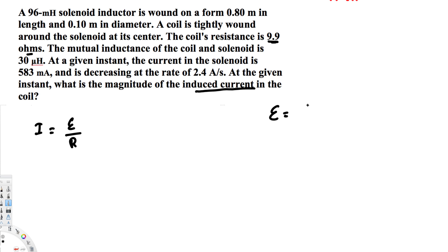emf is equal to M times dI by dt. This M represents the mutual inductance of the coil and the solenoid, that is given right here, 30 microhenries. And dI by dt is the decreasing rate of the current, that is 2.4 amperes per second. Now we can plug that into this equation to find our emf.